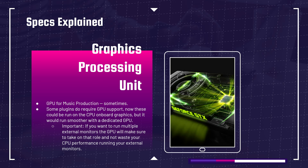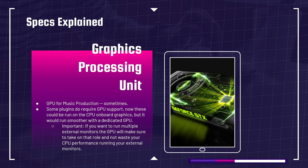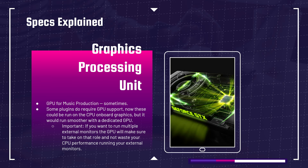Next is the GPU — graphics processing unit. Do you need a GPU for music production? The answer is sometimes. Some plugins require GPU support, and these could run on the CPU's onboard graphics, such as Intel Iris Xe or AMD Radeon. However, if you're using a plugin that's very graphics-heavy — check the system requirements — you'd want a dedicated GPU like those found in gaming laptops, such as an NVIDIA RTX 3050 Ti or 3060, or an AMD Radeon RX 6700S in the Asus Zephyrus G14.